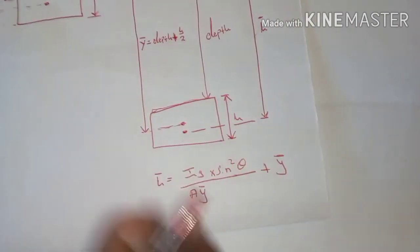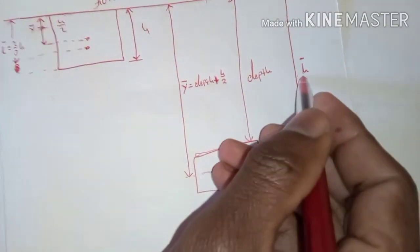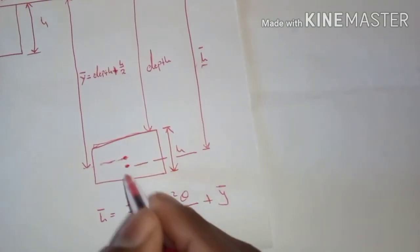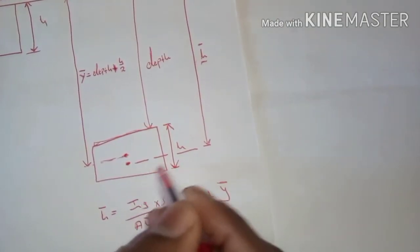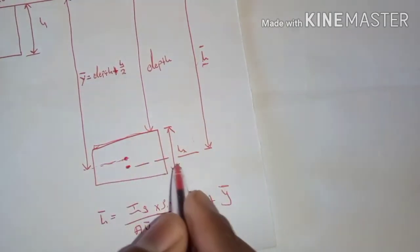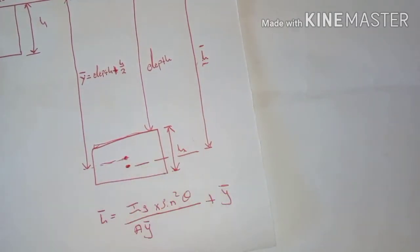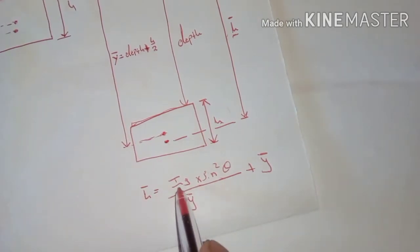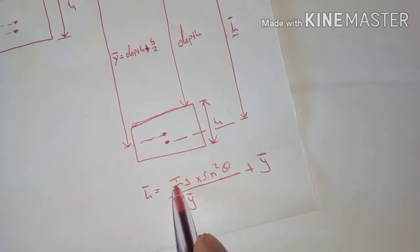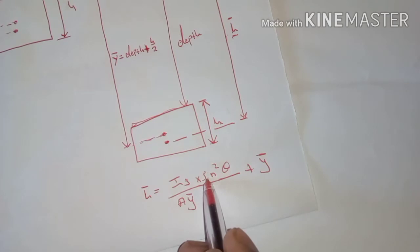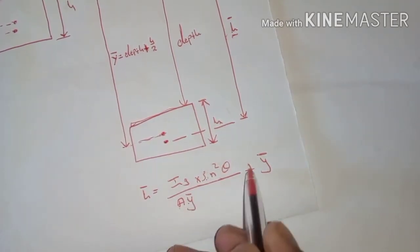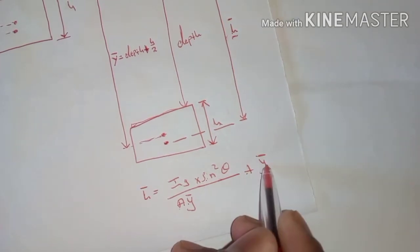The formula to calculate h changes. We no longer use the formula where it's one-third of the height from one point and two-thirds from another. We are no longer using that formula. Now we use a new formula: h-bar equals moment of inertia times sine squared theta, divided by area times y-bar, all plus y-bar.